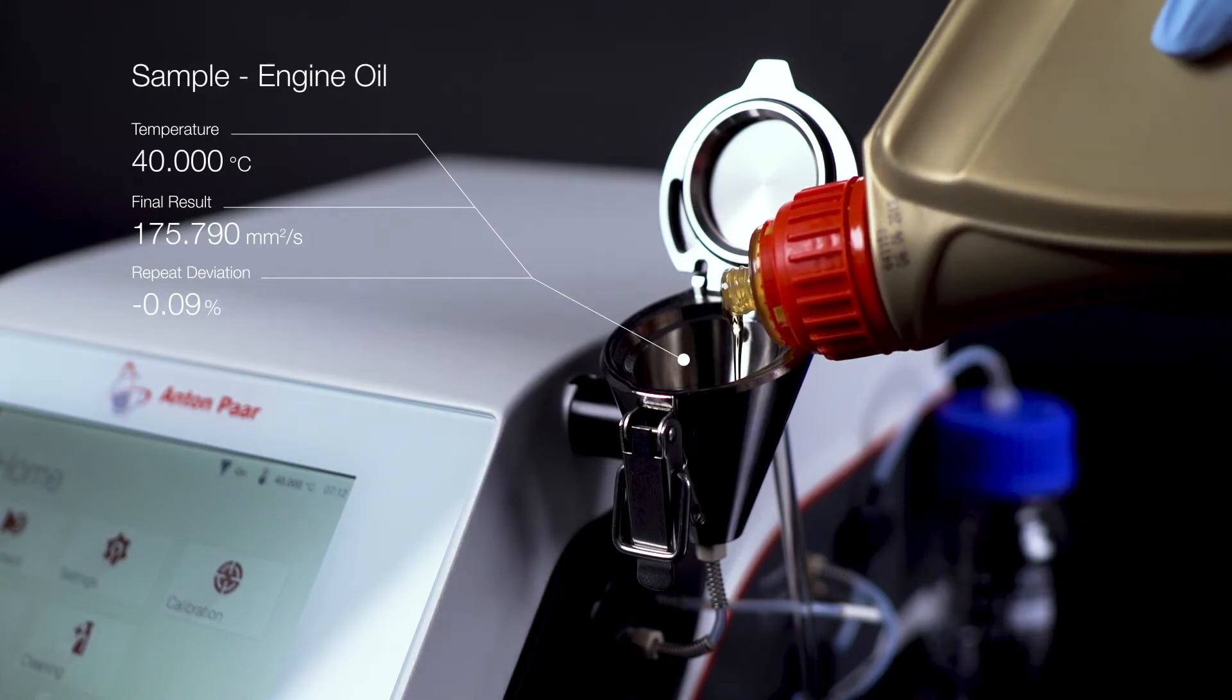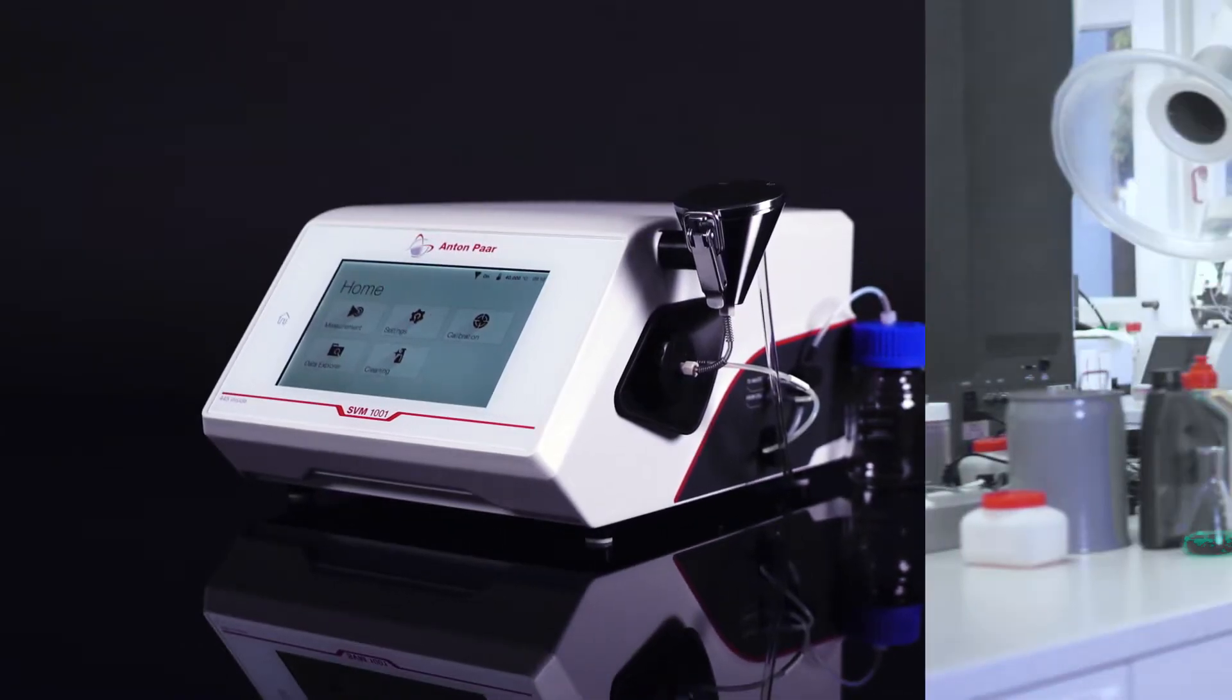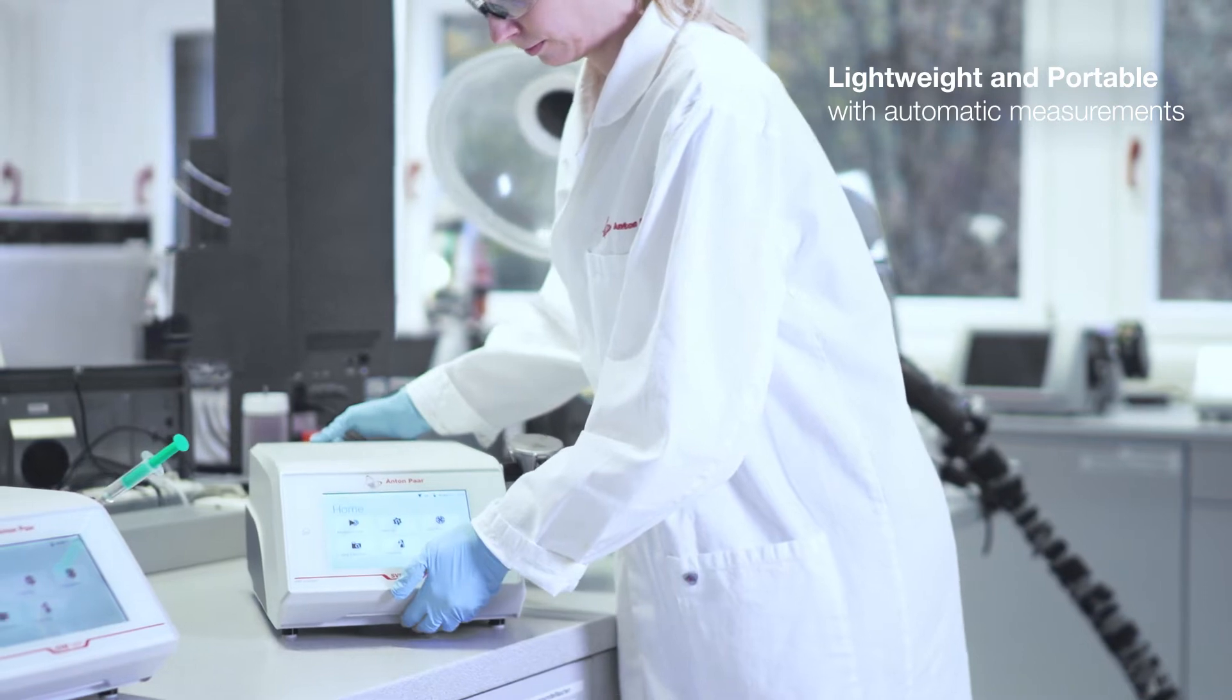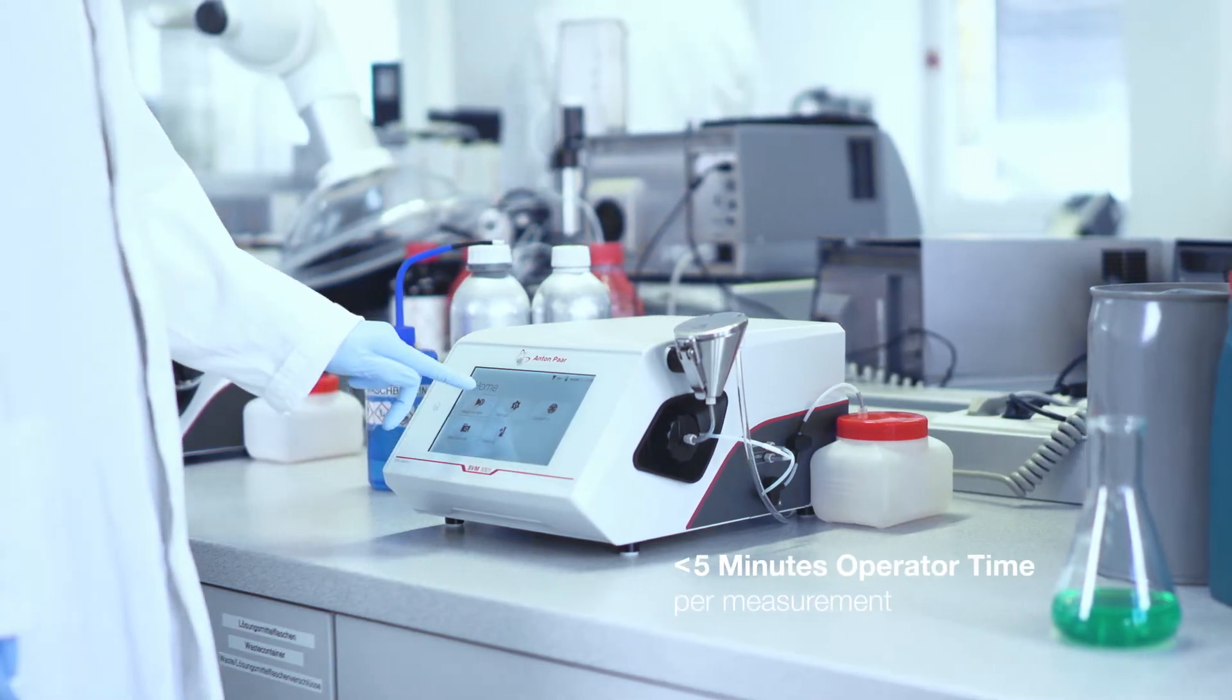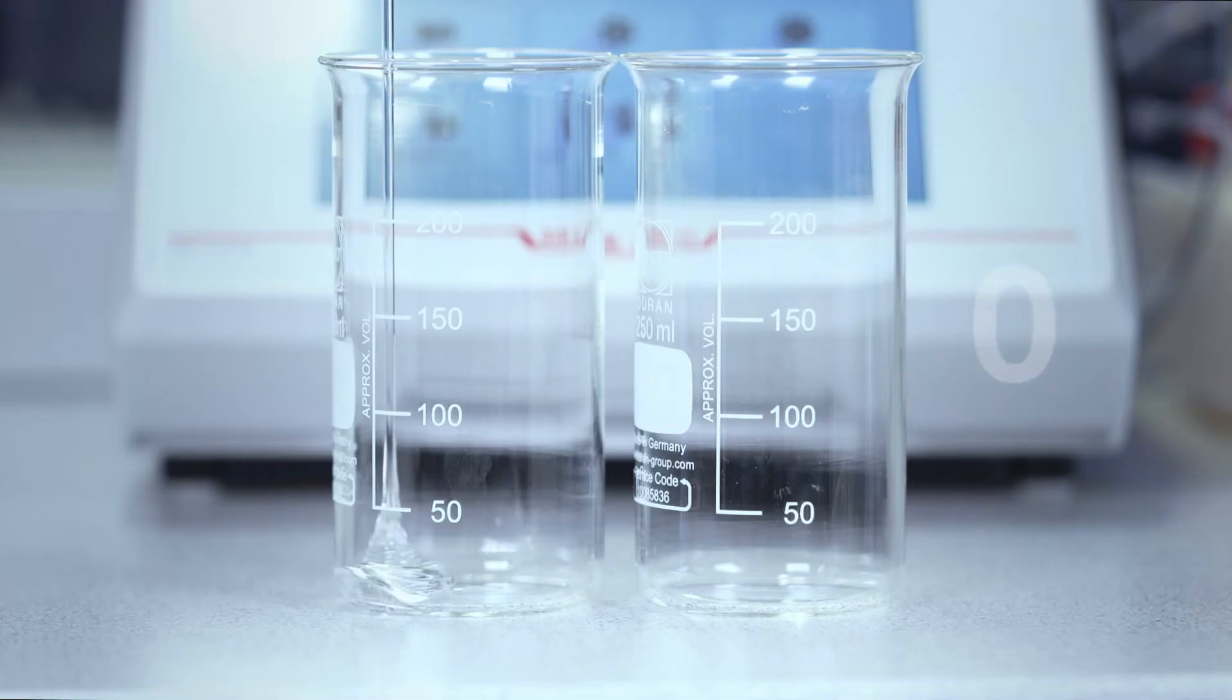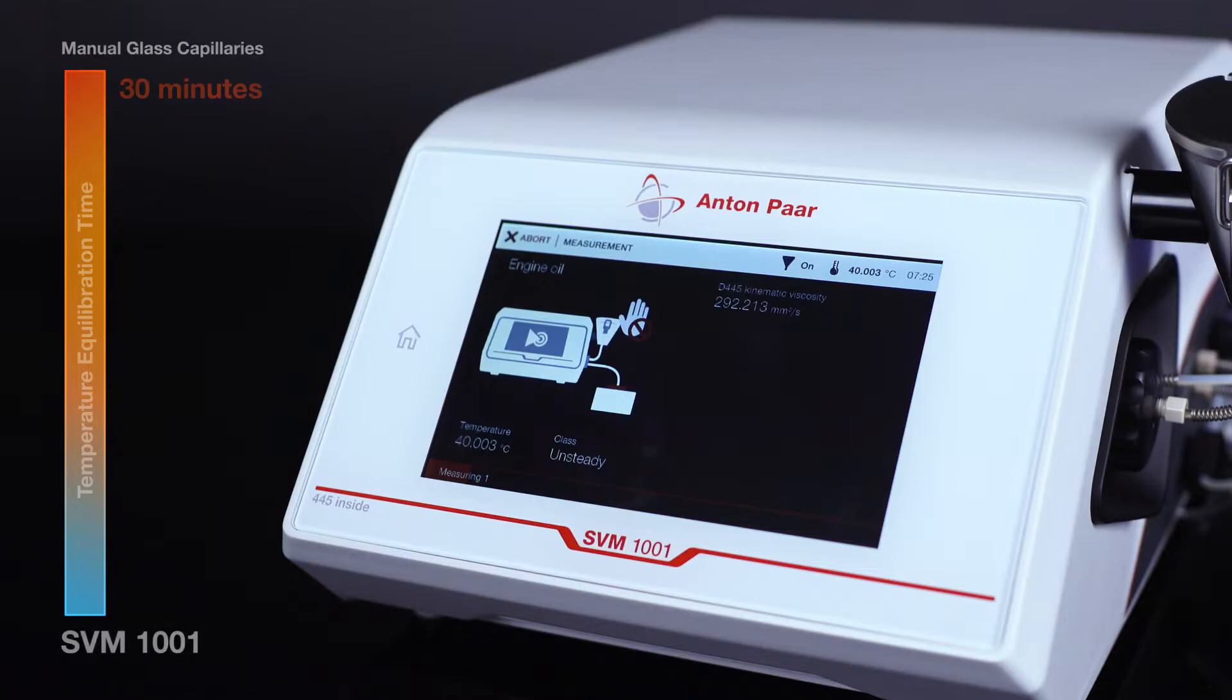Combining trusted technology and the features our customers love most with a price tag making digital viscometry accessible for everybody. SVM 1001 is fast, though in more ways than one: 37 samples per hour, a 1000% quicker temperature equilibration, and effortless super-fast filling.